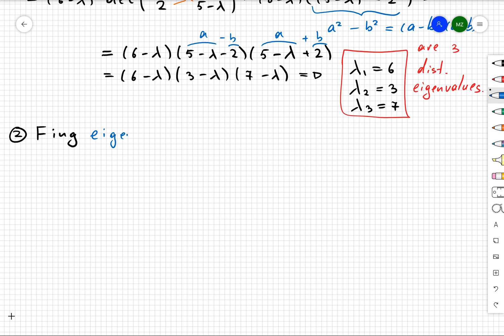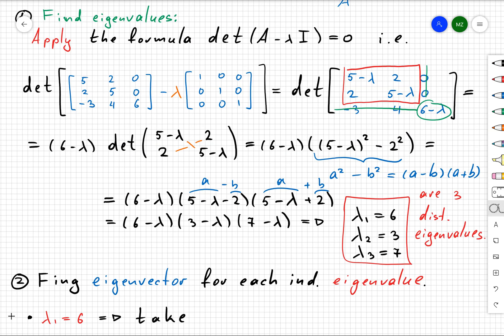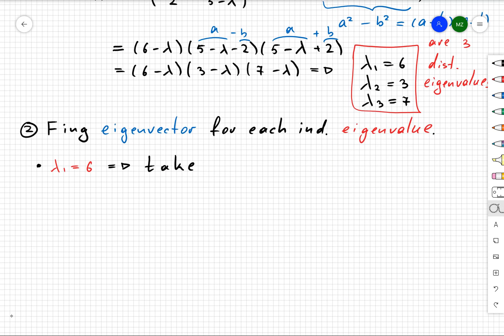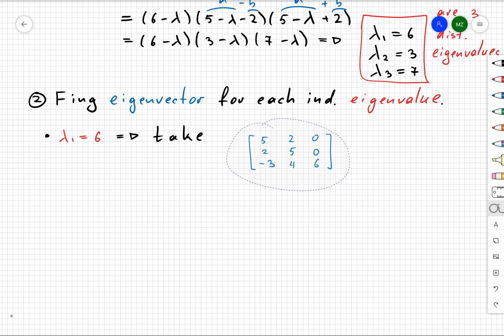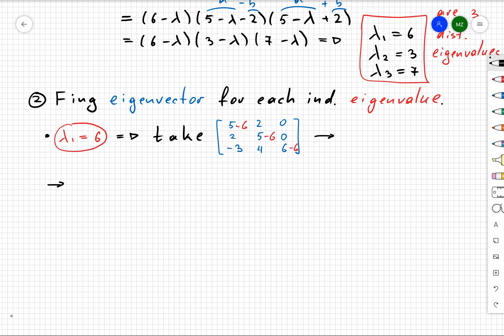So the next step, we want to find the eigenvector. For that, let's choose our first eigenvalue, which is λ₁ = 6. We want to take the original matrix, and we're going to subtract 6 from the diagonal. We're going to obtain the following matrix: